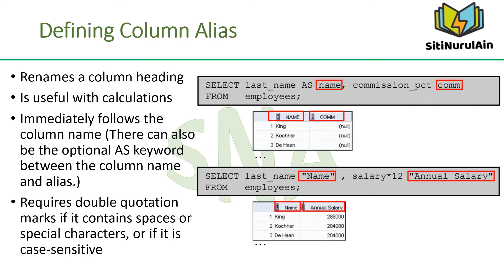When displaying the result of a query, SQL Developer normally uses the name of the selected column as the column heading. This heading may not be descriptive and may be difficult to understand. You can change a column heading by using a column alias. The first example displays the names and commission percentages of all employees. The optional AS keyword can be used before the column alias name, and the result is the same whether AS is used or not. Note that column aliases in lowercase appear as uppercase headings in the output. The second example displays last names and annual salaries of all employees. Because the alias 'Annual Salary' contains a space, it has been enclosed in double quotation marks, and the column heading in the output matches the alias exactly.